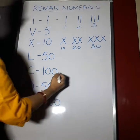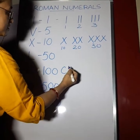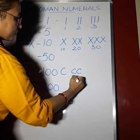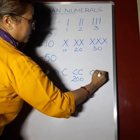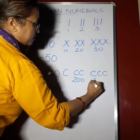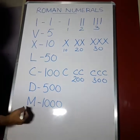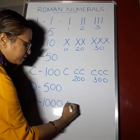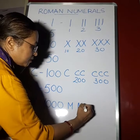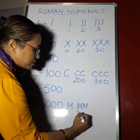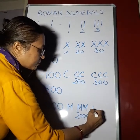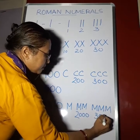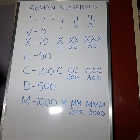C can also be repeated. C is 100, CC is 200, and CCC is 300. M stands for 1000 and can also be repeated — M is 1000, MM is 2000, and MMM is 3000.